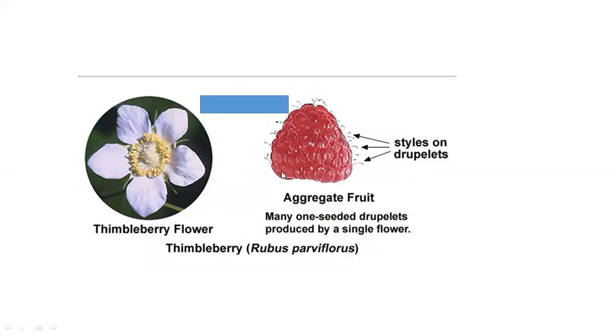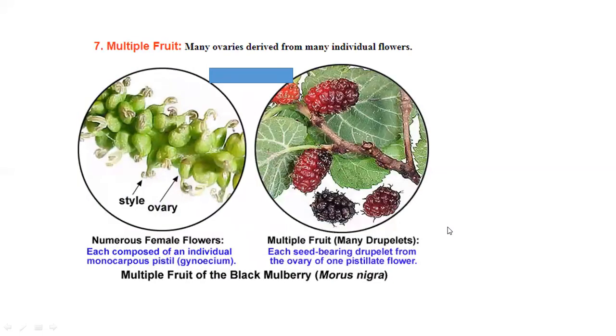This is an etaerio of drupelets, where styles persist on the drupelets. This is seen in black mulberry, Morus nigra.